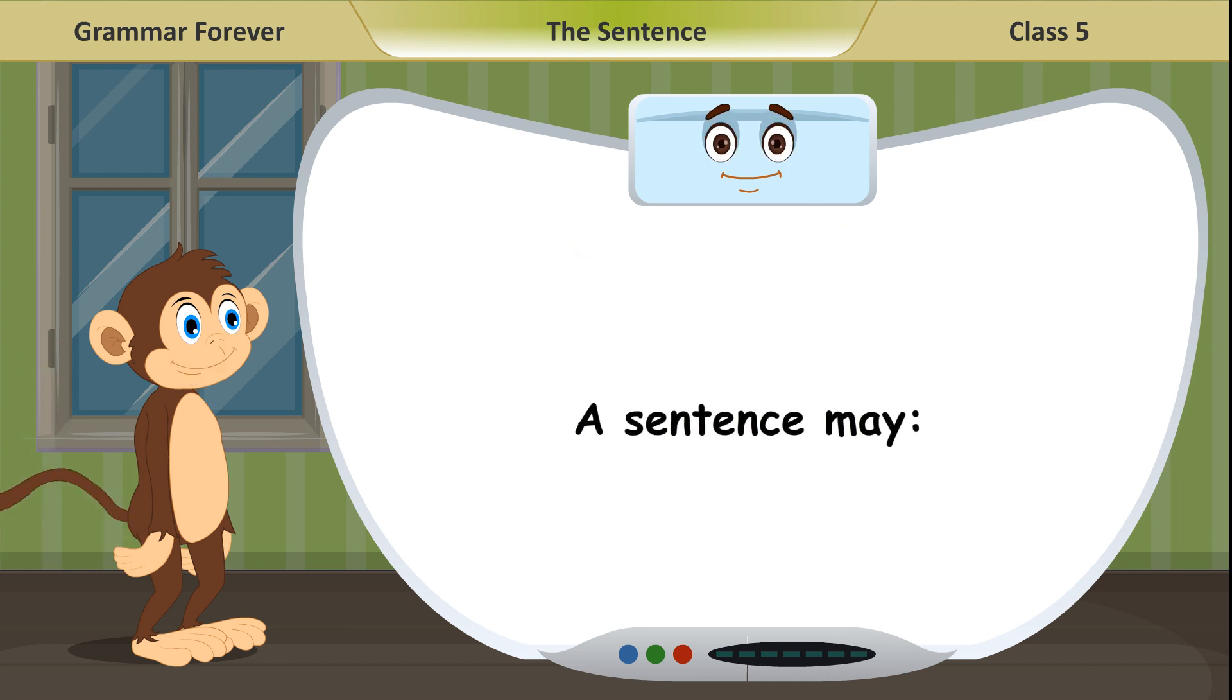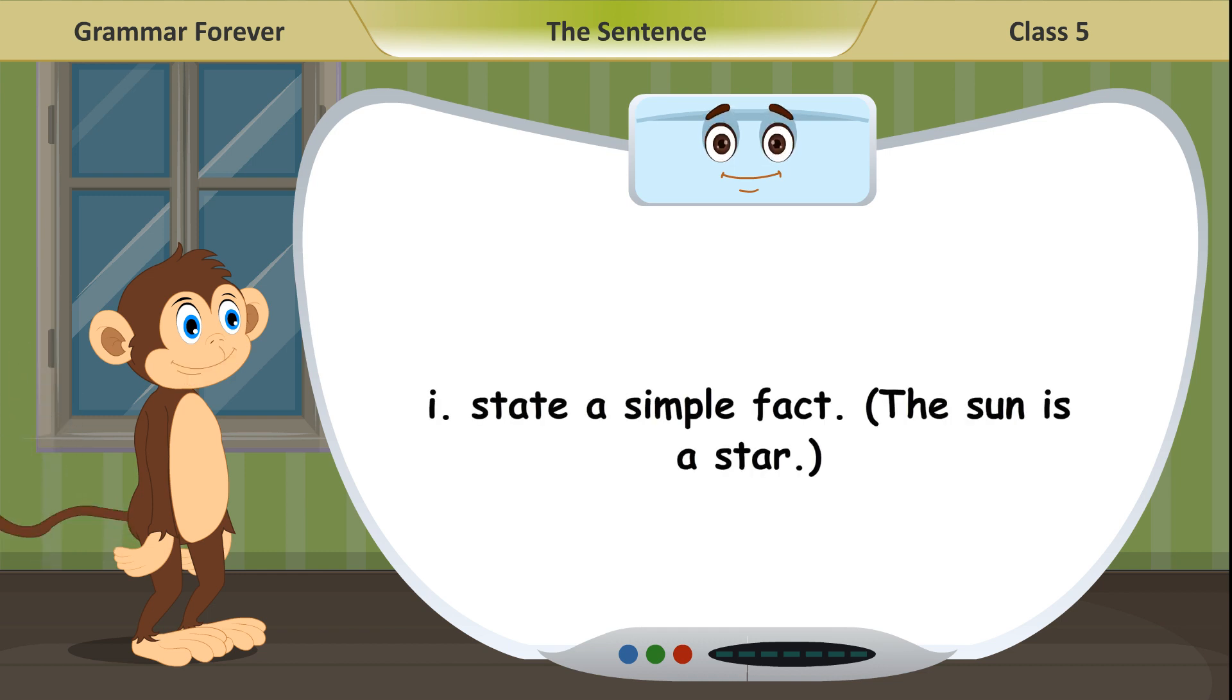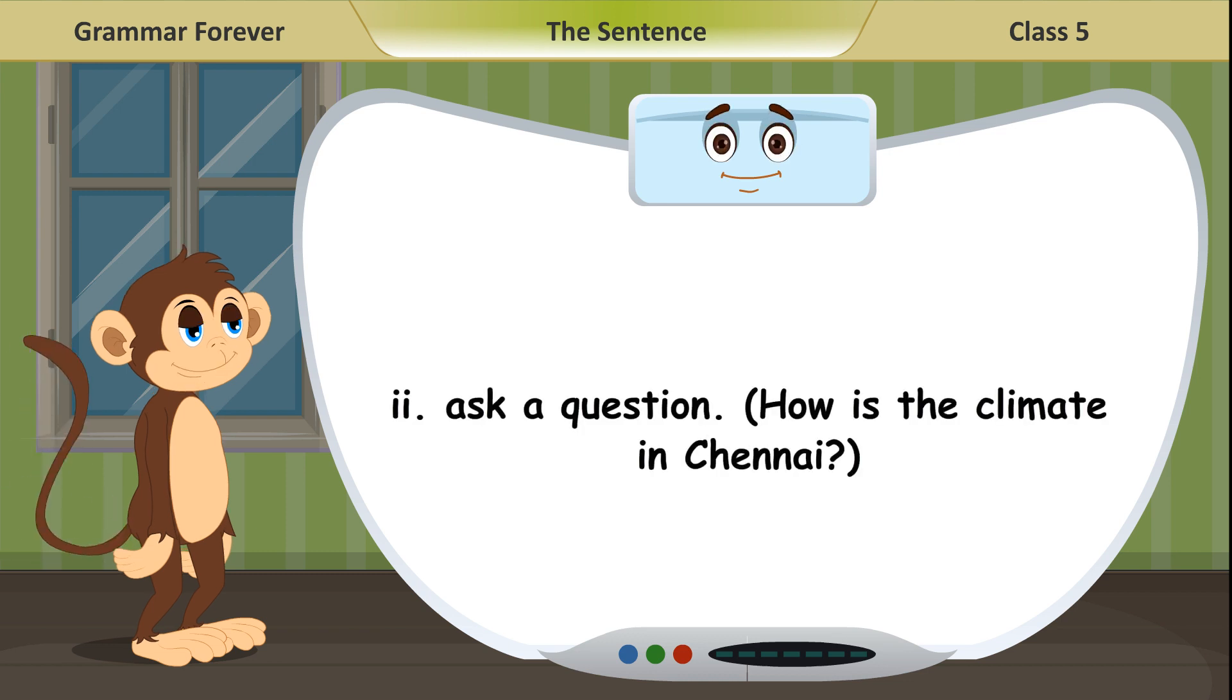A sentence may: First, state a simple fact. The sun is a star. Second, ask a question. How is the climate in Chennai?